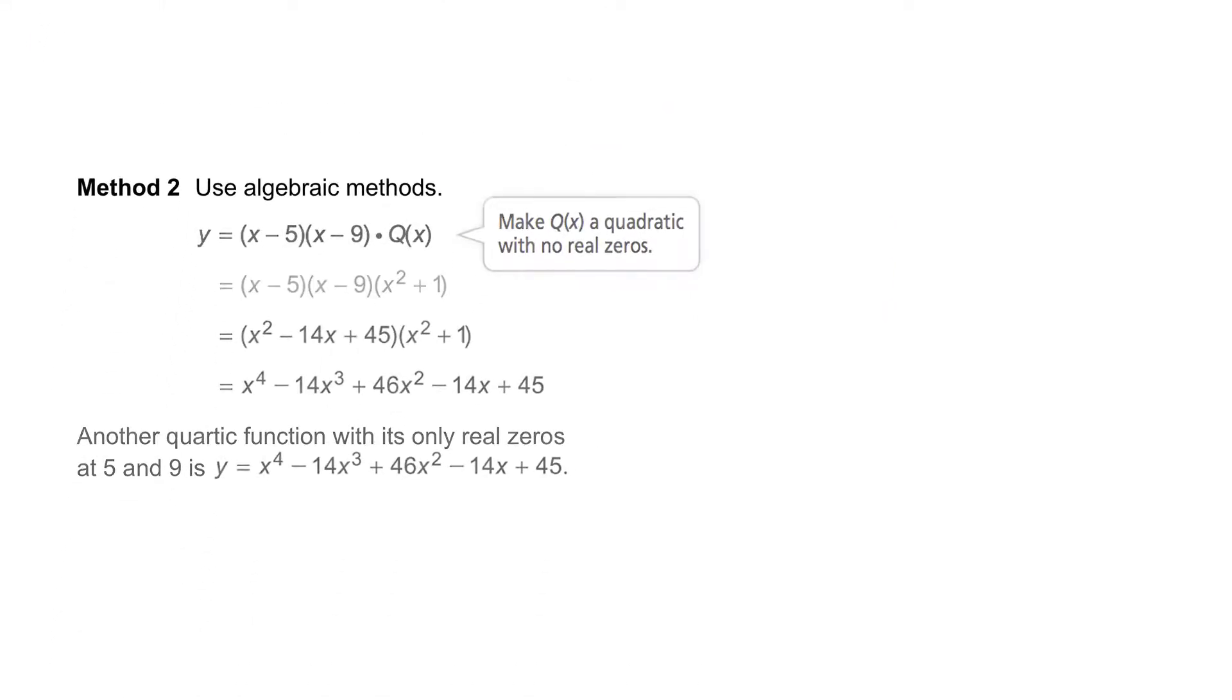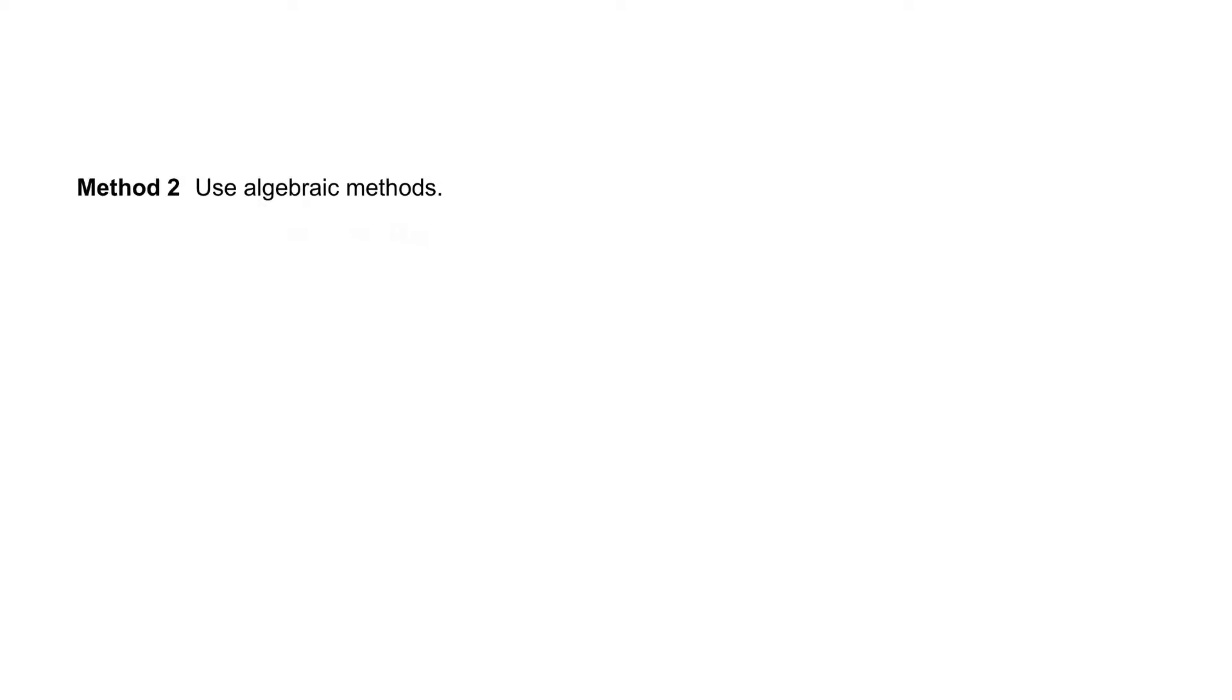Method 2 uses algebraic methods. Given real zeros of x equals 5 and x equals 9, we can write y equals x minus 5 times x minus 9 times some remaining polynomial function q of x.